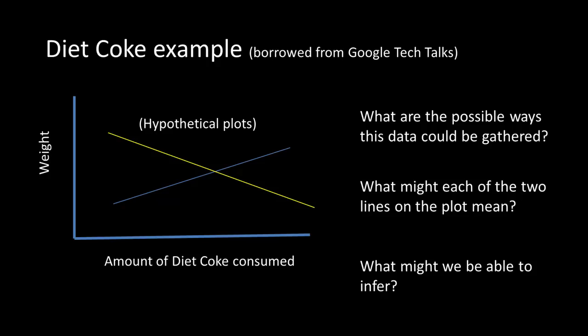On the other hand, suppose you consider the other line in which as the amount of Diet Coke consumed increases, you find the weight is increasing. Could you say that consumption of Diet Coke is what caused the weight to increase? Or is it that as people become heavier, they become more conscious of their calorie intake and start consuming Diet Coke instead of classic or regular Coke? We don't know. We cannot draw any conclusions unless this was a controlled kind of experiment.